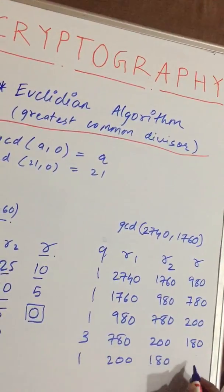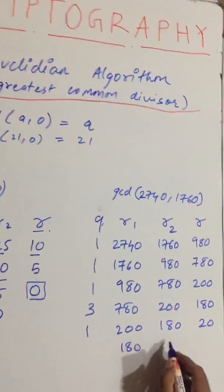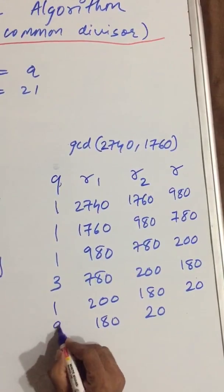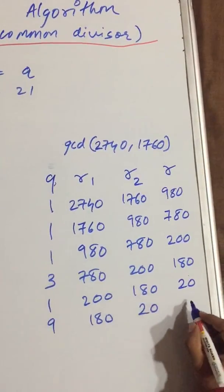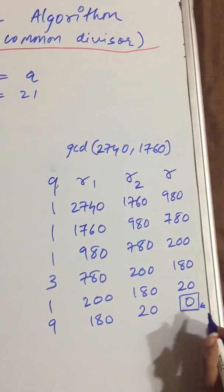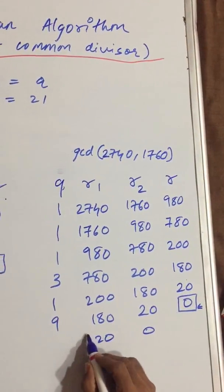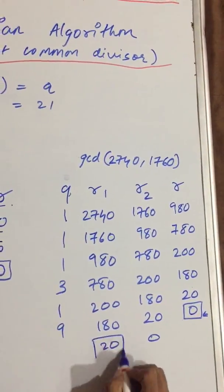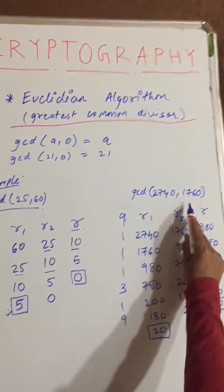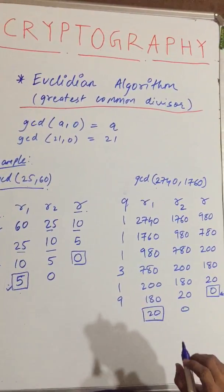Continuing the process, we eventually get remainder 0. Shift both terms, and so the GCD of 2740 and 1760 is 20. Thank you.